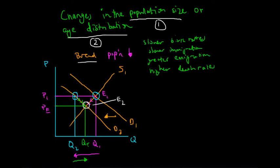The same analysis applies if we experience an increase in the population size. With a population increase, we would expect the demand curve to shift to the right, suppliers would experience a shortage in production and therefore price would increase, resulting in an expansion in supply rather than a contraction. The demand would move from Q2 to Q1 and then back to QE. That is the analysis of how changes in population size might affect the market for bread.